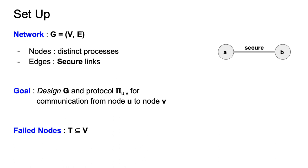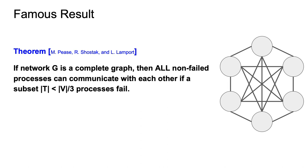Sometimes nodes will fail. We'll denote by T the subset of nodes that fail. When a node fails in our model, it fails in a Byzantine way. That is to say, that failed processes can coordinate and deviate arbitrarily from the assigned protocol pi. Traditionally, secure communication has been studied for nodes connected as a complete graph. The famous PSL theorem states that all non-failed nodes can securely communicate with each other in a complete graph if less than a third of them fail.